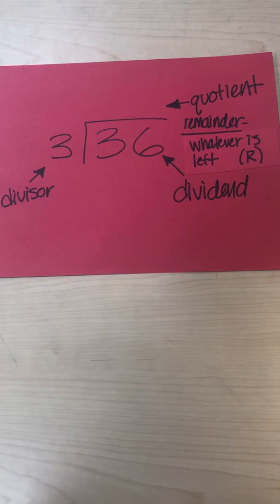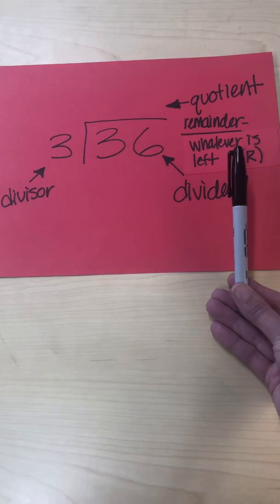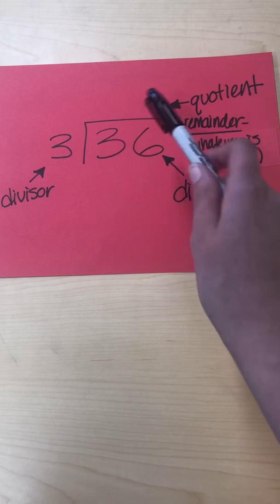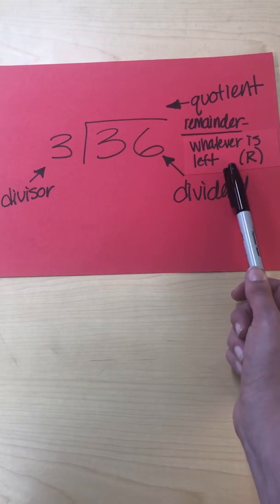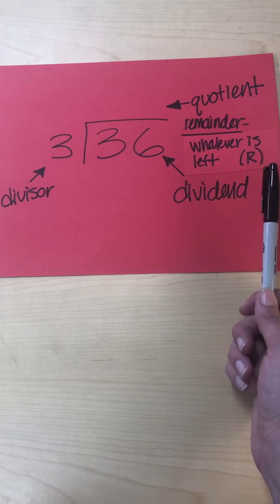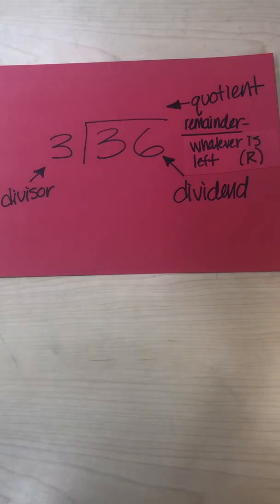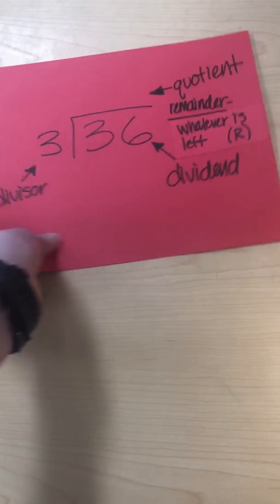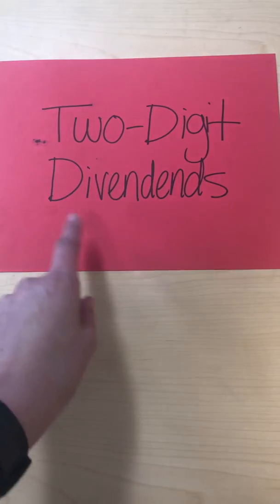Another word you may hear — not for every single problem, but for some — is remainder. A remainder is basically whatever's left over after you divide everything out. The way you abbreviate remainder is with an R and then whatever number is left over.